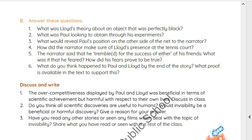Last question: What do you think happened to Paul and Lloyd by the end of this story? What proof is available in the text to support this? Answer: Both Paul and Lloyd died by the end of this story, because the narrator could see no more flashes of light and the shadow had become long and stationary.